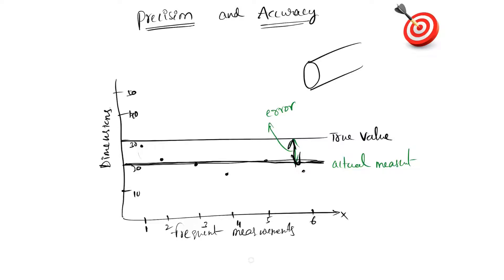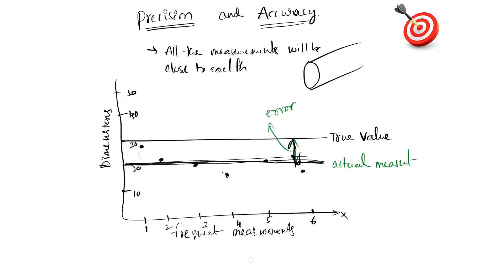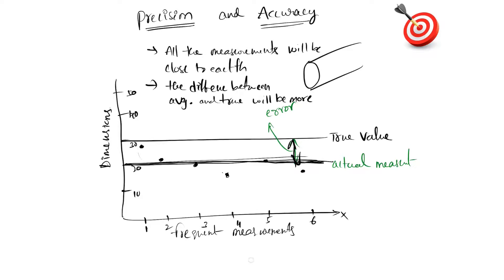Now let's define precision. In this case, in precision, all the measurements we have got are very close to each other. All the measurements will be very close to the average value, but the average value and the true value will have a large difference — that is, more error. So the difference between the average value and the true value will be more in the case of precision.